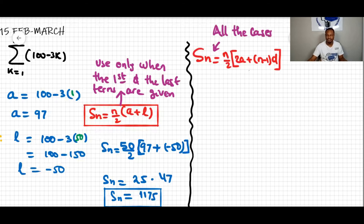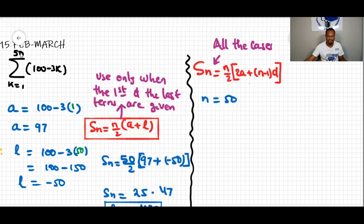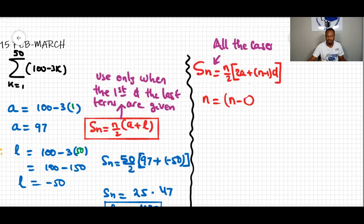In this situation, we know the number of terms is 50, since the sum goes from 1 to 50. The formula for the number of terms is: n = (last value) minus (first value) plus 1, so 50 minus 1 plus 1 equals 50. There are 50 terms.